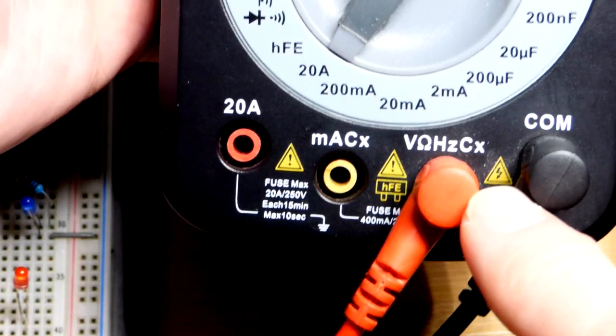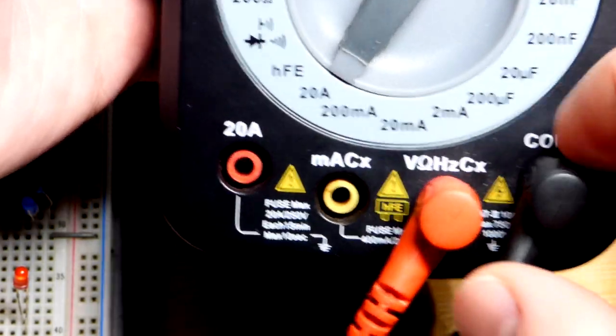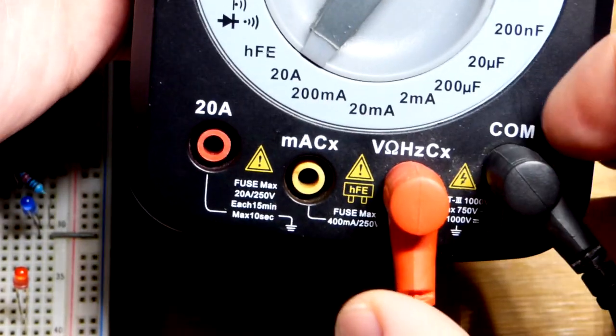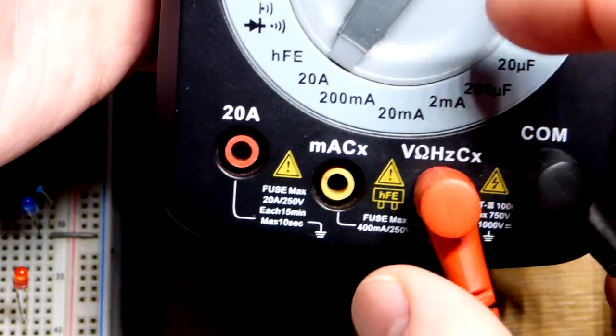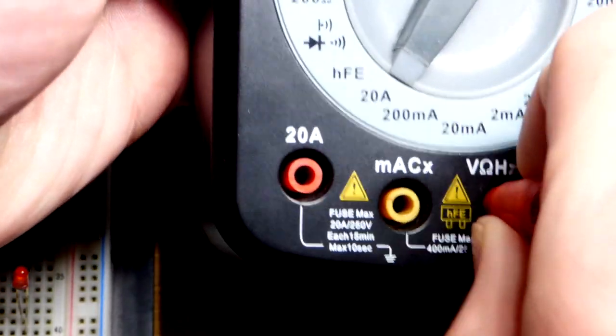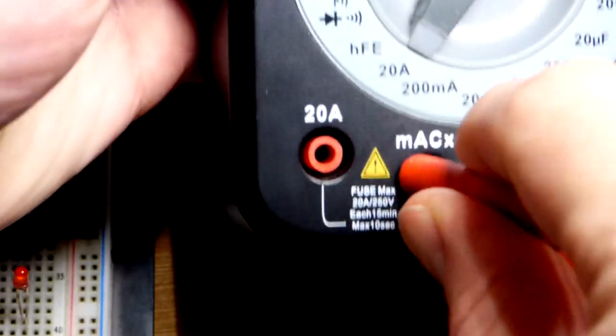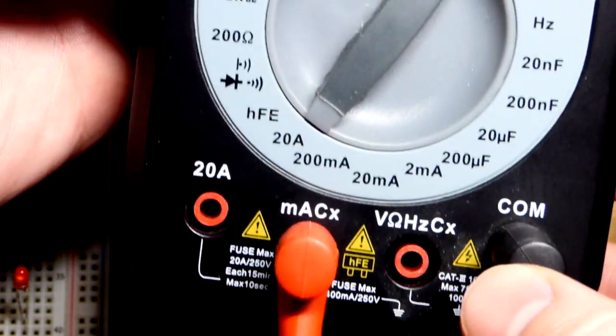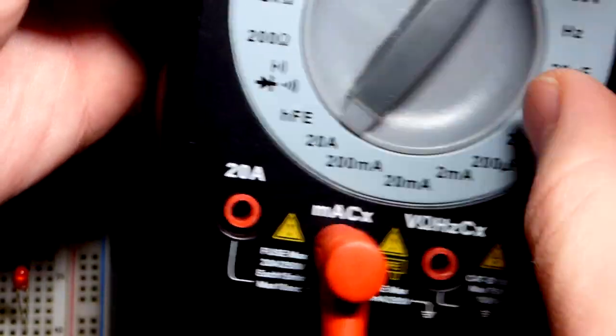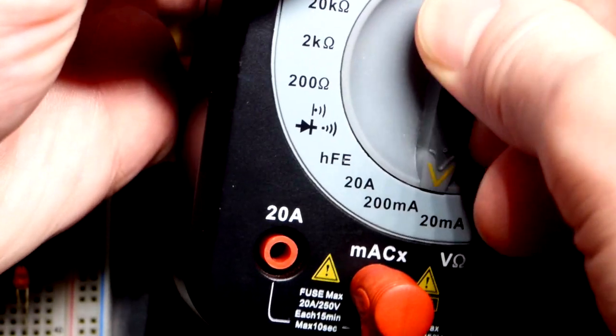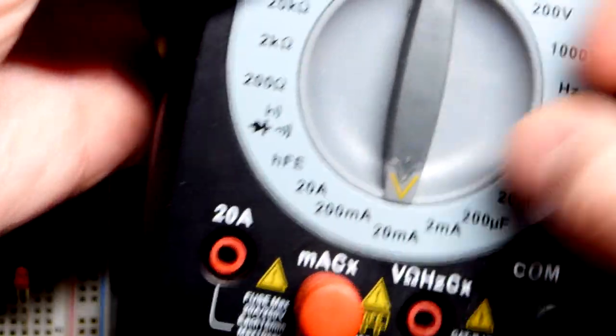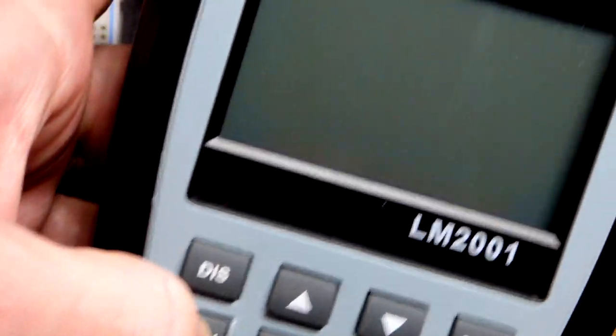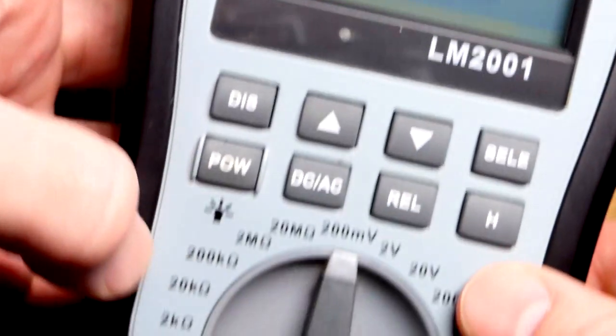So now we come to my other meter. By the way, these meters probably will not be available, so I'm not even going to show the brand names or anything. But in any case, we actually have to move the red probe in this case to measure milliamps as you can see there, black stays common. And we are going to be measuring less than 20 milliamps so we're going to set it to 20 milliamps. We also have to turn the power on for this particular meter right there.